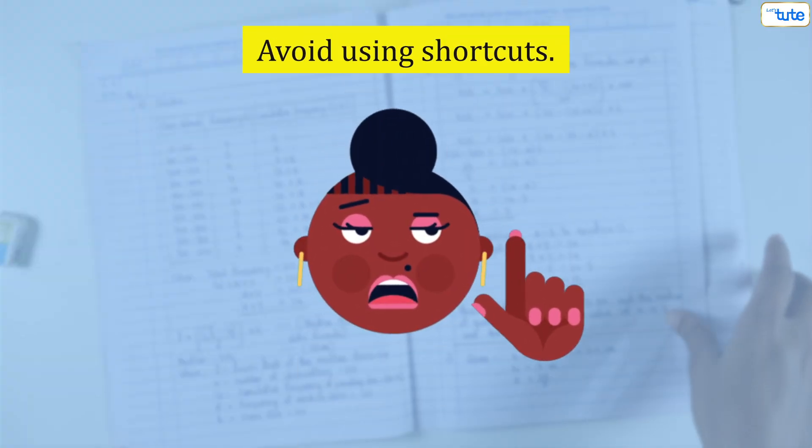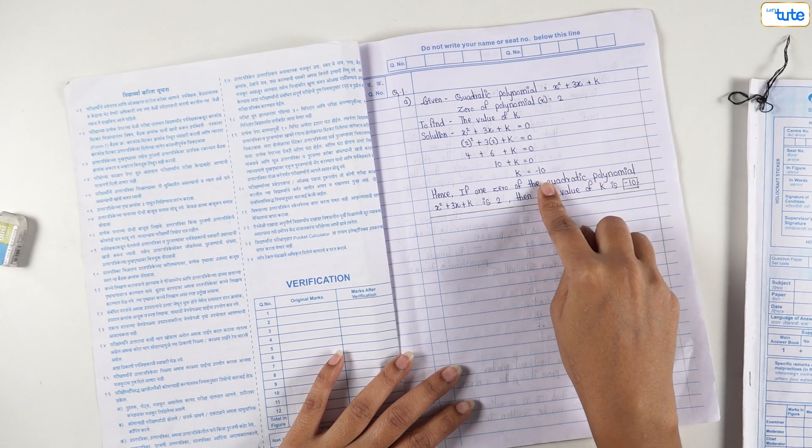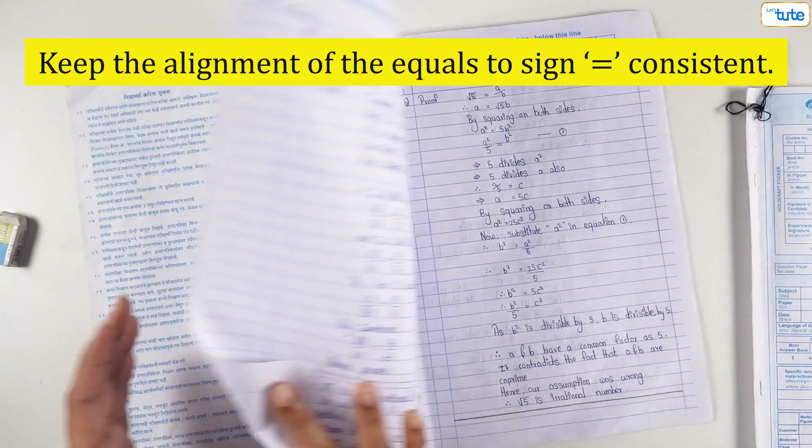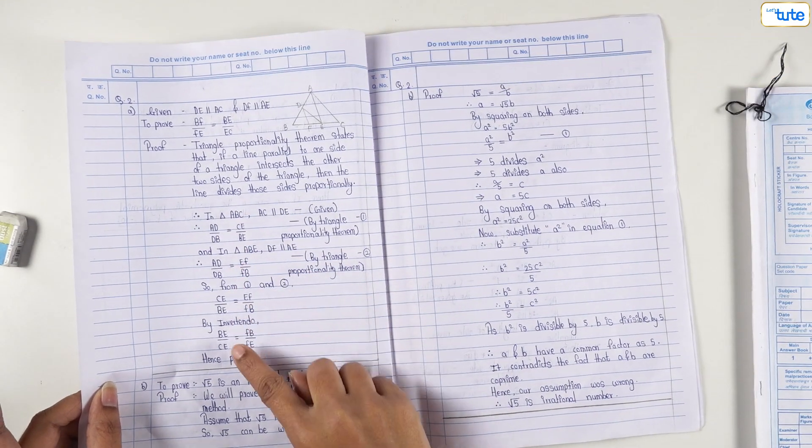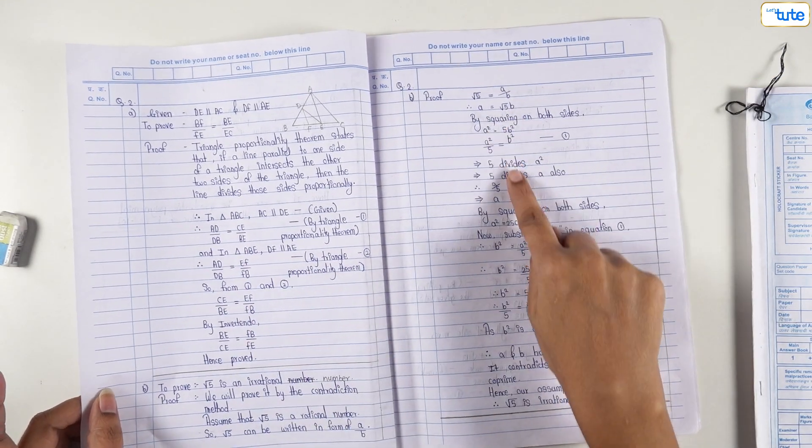Avoid using shortcuts. In the entire answer sheet, try keeping the alignment of the equal to sign consistent. Write the equations on either side of the sign.